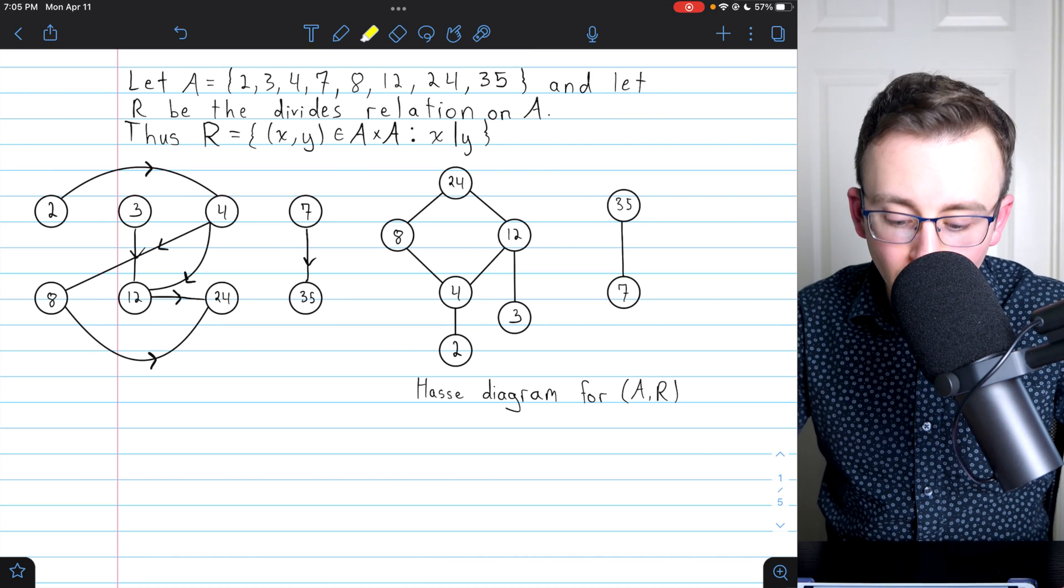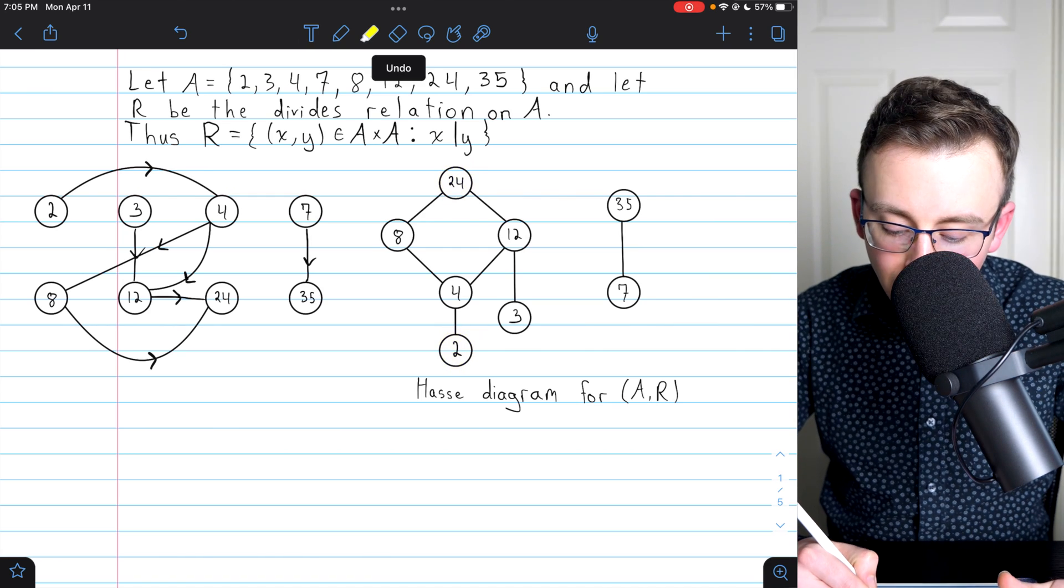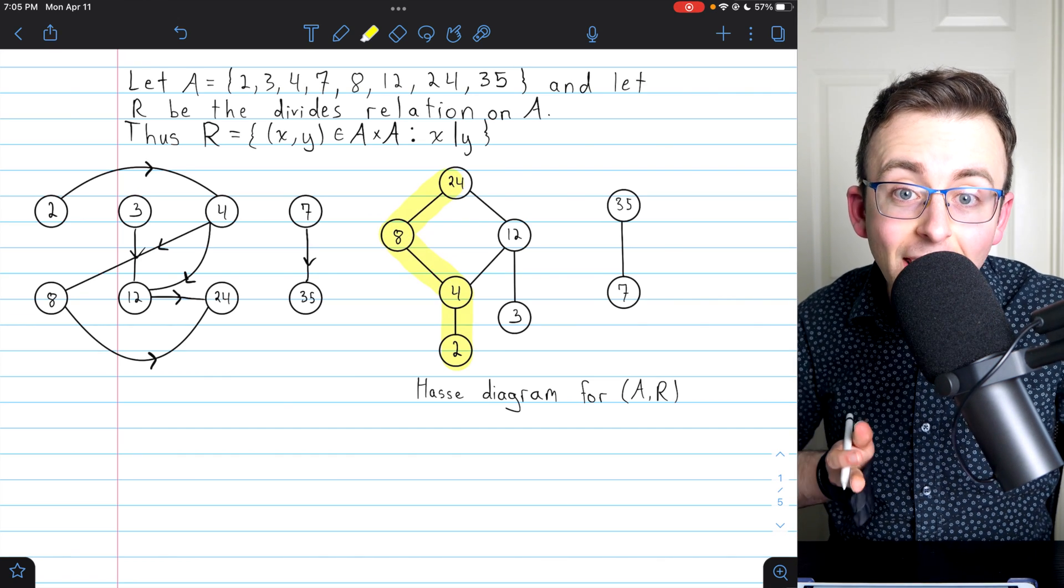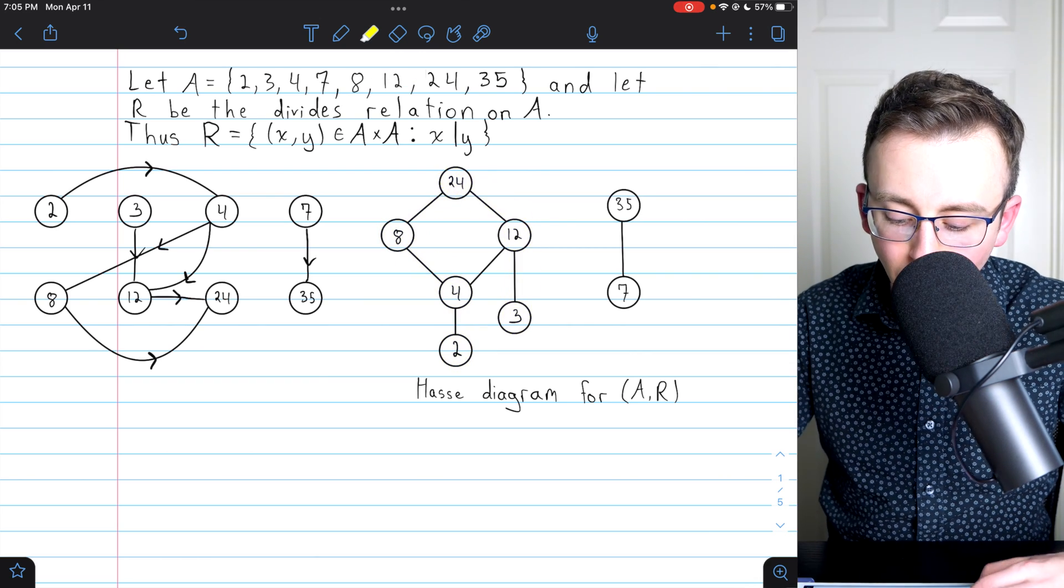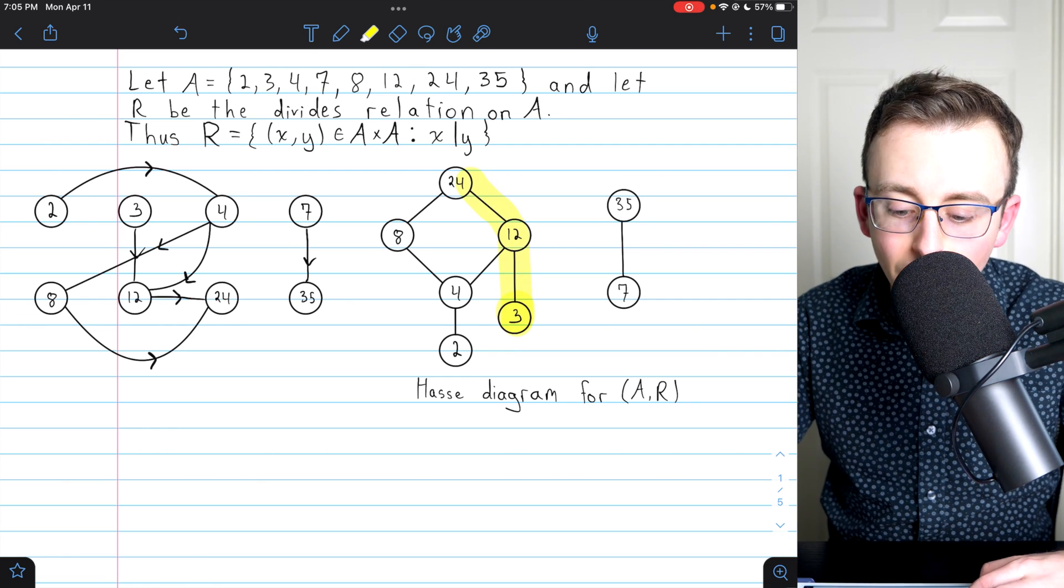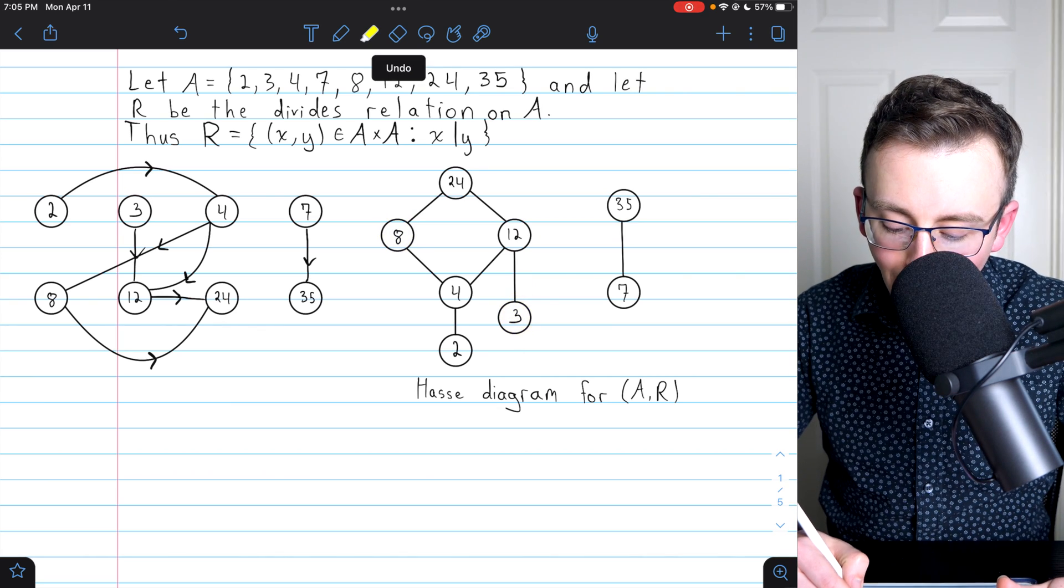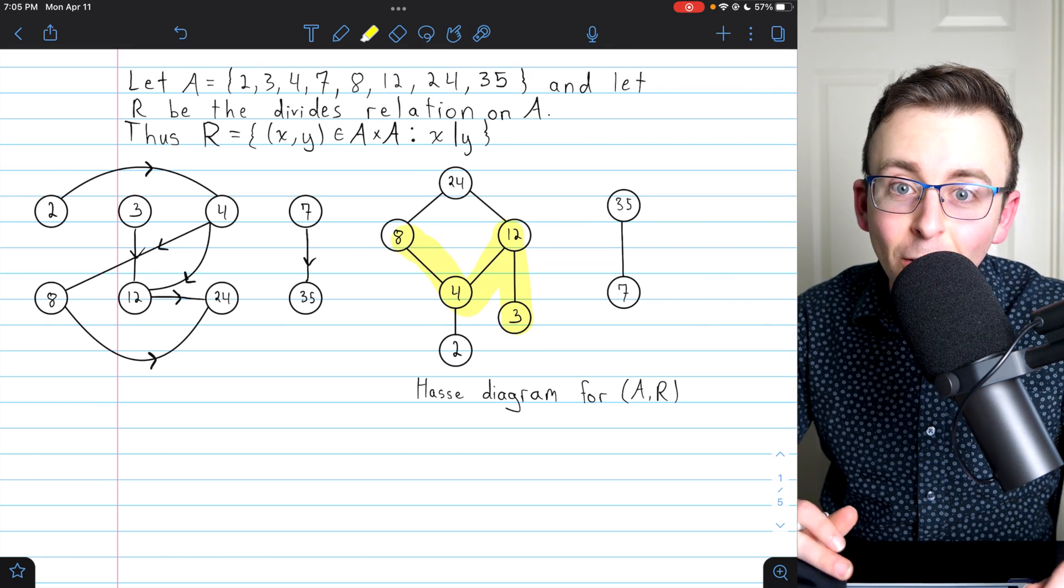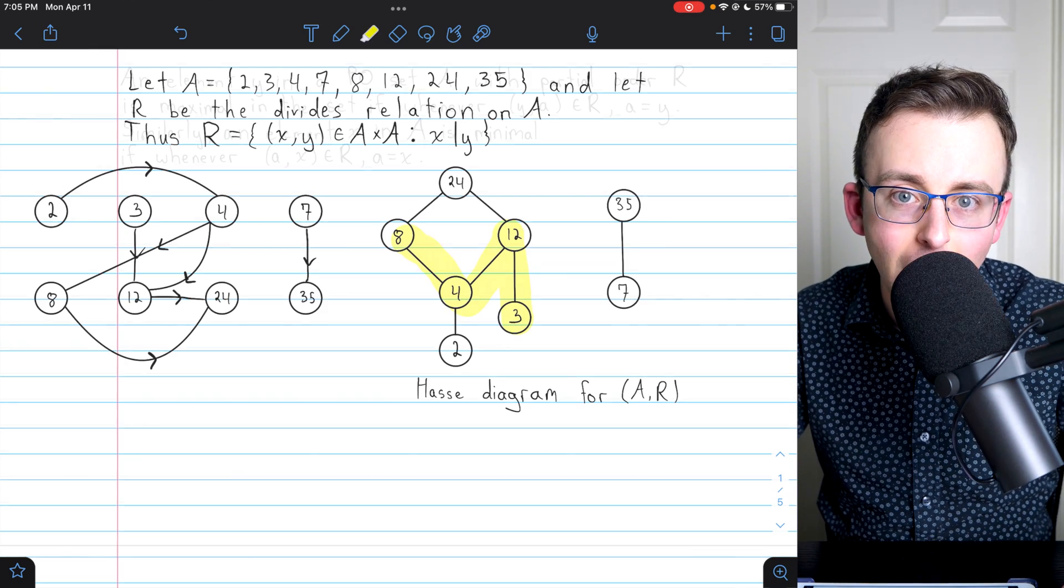Now in the Hasse diagram, we can see how 2 relates to 24, for example, because I can go from 2 to 24 by traveling up the diagram. And up is the direction of our relation here. I know that 3 relates to 24, because I can travel from 3 to 24 by moving up the diagram. On the other hand, 3 doesn't relate to 8, because although I could travel to 8 if I just walked around arbitrarily, I wouldn't be moving up the diagram the whole time. And transitivity holds by moving up the diagram.